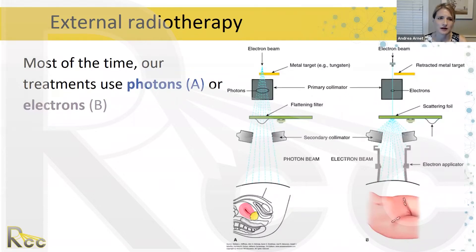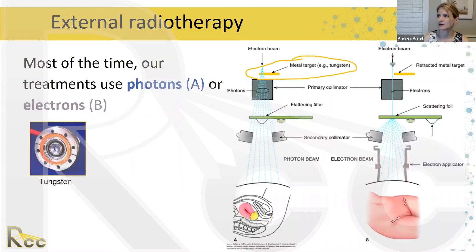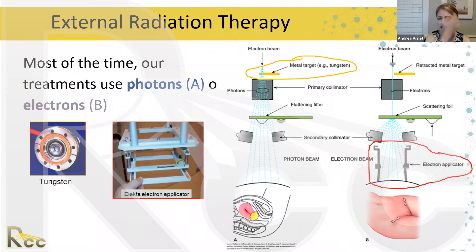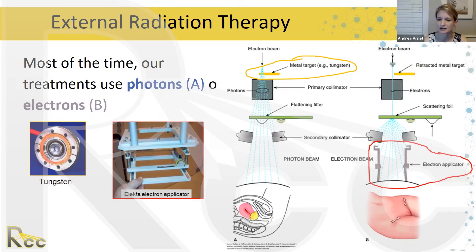Most of the time with external radiation therapy we use photons or electrons. With photons, an electron beam targets and passes through a metal target, then through a primary collimator, flattening filter, and secondary collimator before reaching the patient. For electrons, the metal target is retracted and the beam travels through a primary collimator into a scattering foil, then through a secondary collimator and electron applicator — used for shallow treatments such as skin cancers.